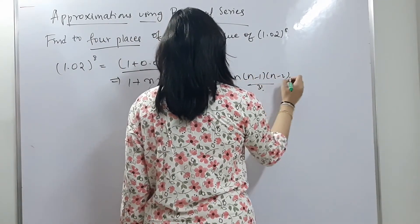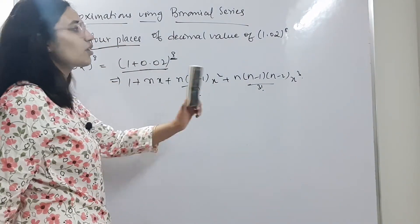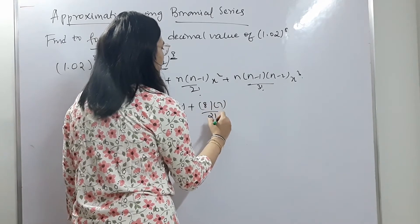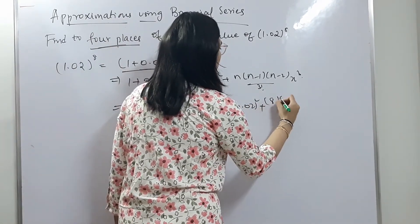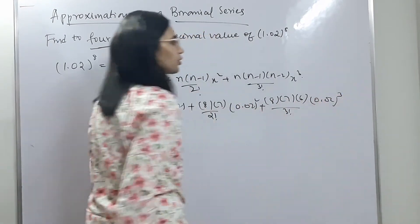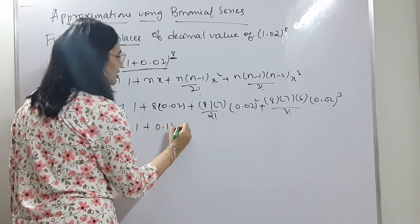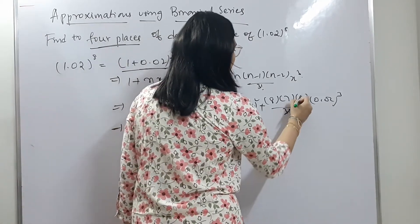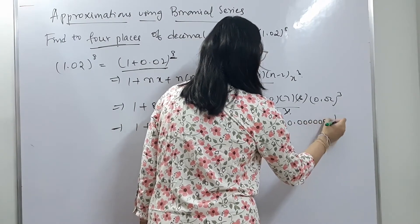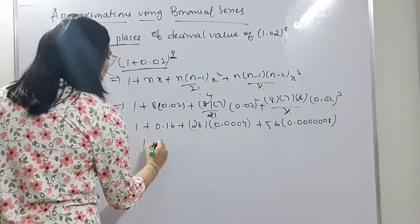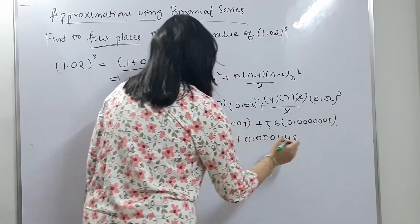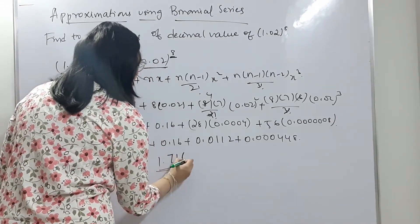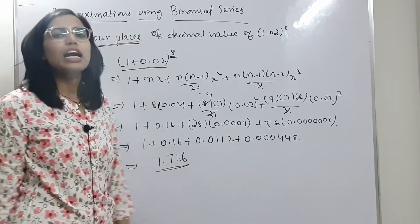Applying binomial series: 1 + nx + n(n−1)/2! · x² + n(n−1)(n−2)/3! · x³. We take four terms for four decimal places. This gives: 1 + 8(0.02) + 8·7/2! · (0.02)² + 8·7·6/3! · (0.02)³, which equals 1 + 0.16 + 28·(0.0004) + 56·(0.000008). Adding all these together gives the approximate value of 1.02^8 as 1.1716. This is how you apply binomial series to get the approximation to four decimal places.